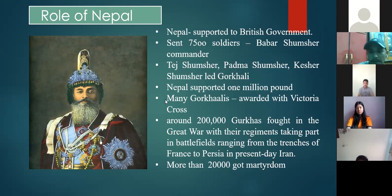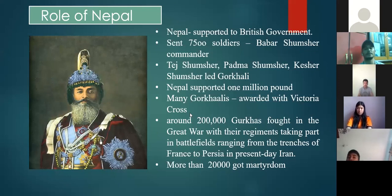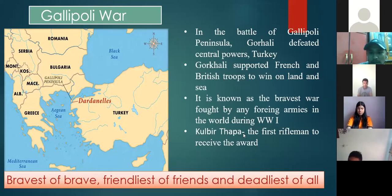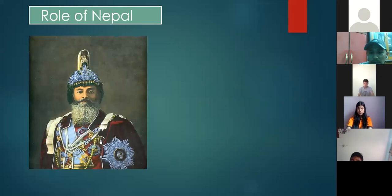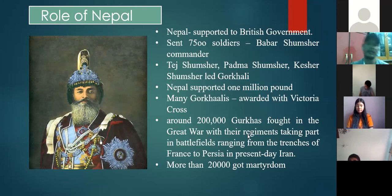Nepal also supported the British government with one million pounds between 1914 and 1915. The Rana regime had a good relationship with the British government at that time. Many Gurkhas were awarded the Victoria Cross. The first person in Nepal's history to receive the Victoria Cross was Kulbir Thapa, for bravery shown in the Gallipoli War. In total, nearly 200,000 Gurkha soldiers fought in the Great War.